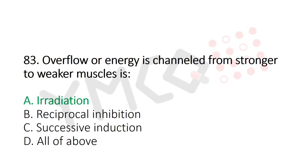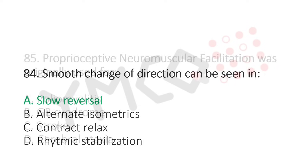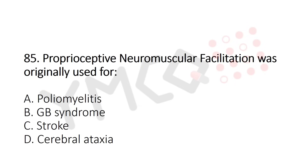Question 84: Smooth changes of direction can be seen in — option A: slow reversal, option B: alternative isometrics, option C: contract relax, option D: rhythmic stabilization. The answer is option A: slow reversal.